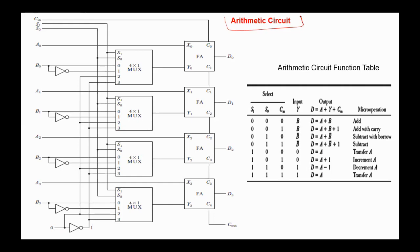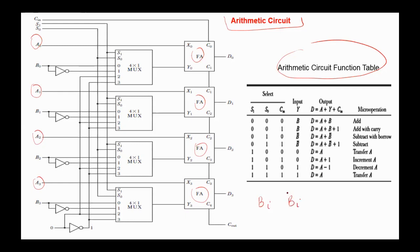In the previous videos, I explained the arithmetic circuit that works according to the following function table. A quick revision of this circuit: we have four full adders. To each full adder, the bits from operand A are applied, and to the second input of the full adder, either BI, not BI, constant 0, or constant 1. We have two select signals S1 and S0, and a carry-in. On 0,0 select, BI is applied to the mux. If carry-in is 0, then we have the add operation, and if carry-in is 1, we have add with carry.